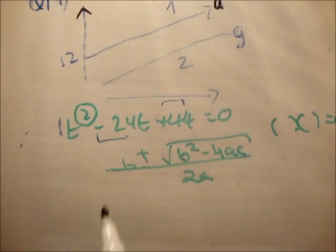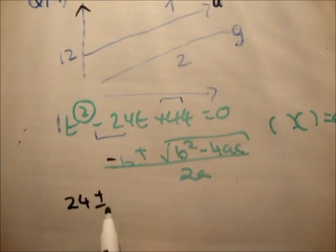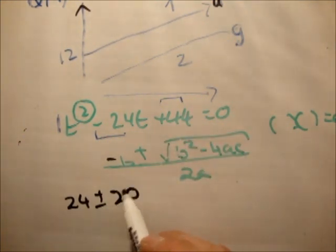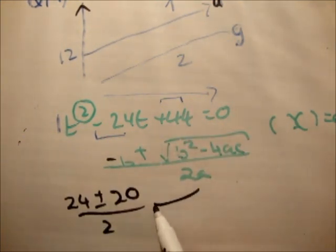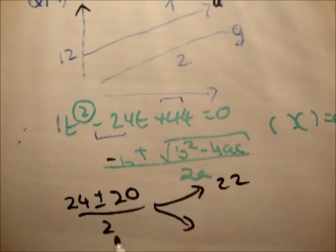So the roots are minus 24. Minus B is minus times minus is 24 plus or minus. I'm going to do the square root here in the calculator. So B squared is minus 24 squared minus 4 times 1 times 44. 400 squared out of that. Get 20 over 2a, which is 2. So we have two answers here. One is 24 plus 20, which is 44, divided by 2. So we have 22 seconds. And the other one is 24 minus 20 over 2. So that's 2 seconds.